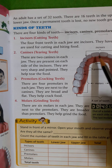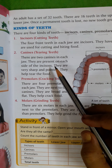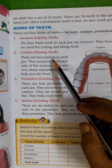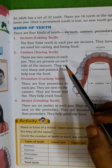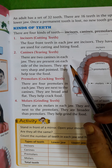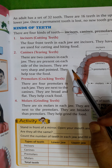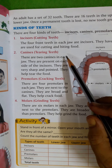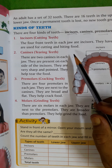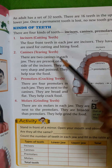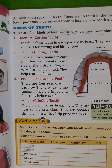Sometimes we tear with the front teeth, and we also cut with the front teeth. For example, suppose you are having an apple — you give a bite to the apple with these incisor teeth.